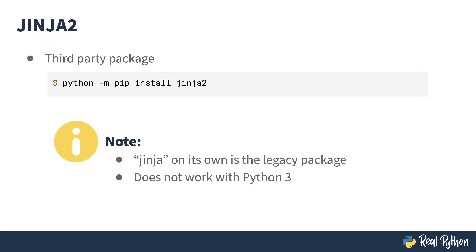Jinja2 is a third-party library, and as such is installed using pip. Best practice here is to use a virtual environment. Note that the reason I keep saying Jinja2 rather than just Jinja is there is a Jinja, but it's legacy. If you attempt to pip install Jinja without the 2, you'll get an error in Python 3. Trust me, I found that out the hard way. Once you've got it installed, head into the REPL to create your first template.